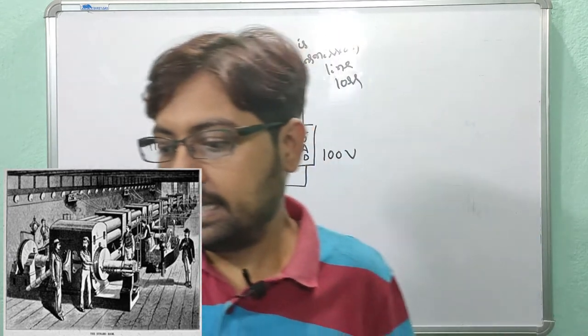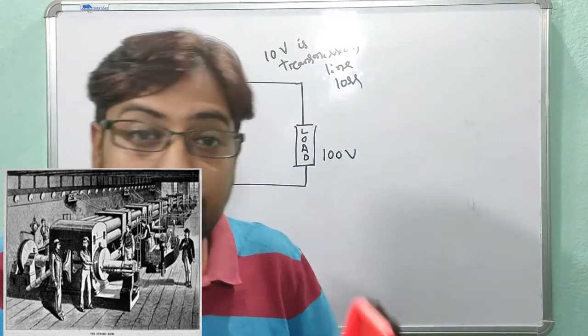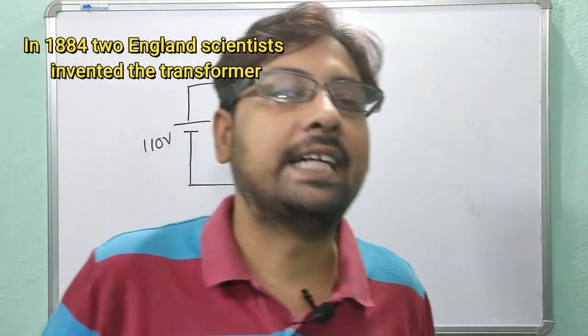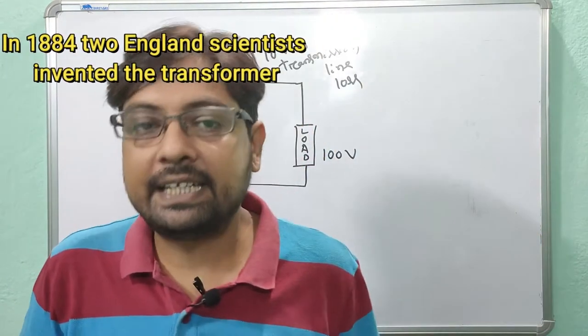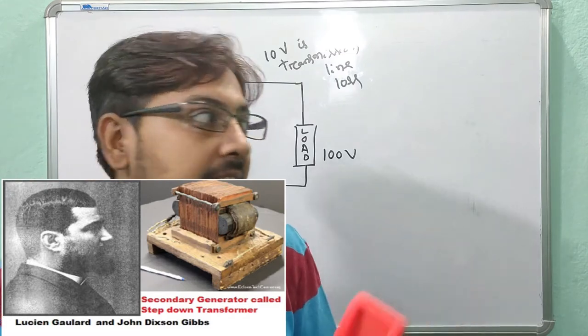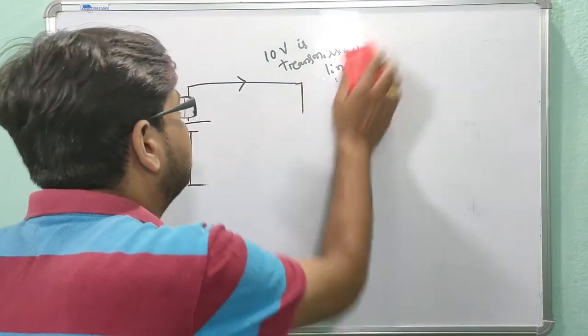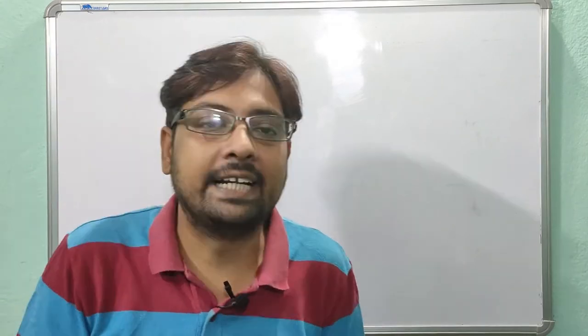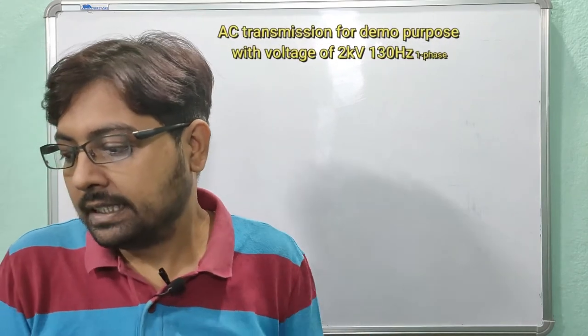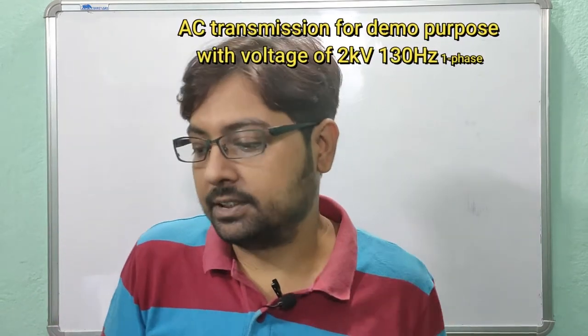Because of these losses, Edison had to build one power plant for every one kilometer. In the year 1884, two English scientists invented the transmission transformer. They used AC transmission for demonstration purposes with a voltage of 2 kilovolts at 130 Hertz, single phase.